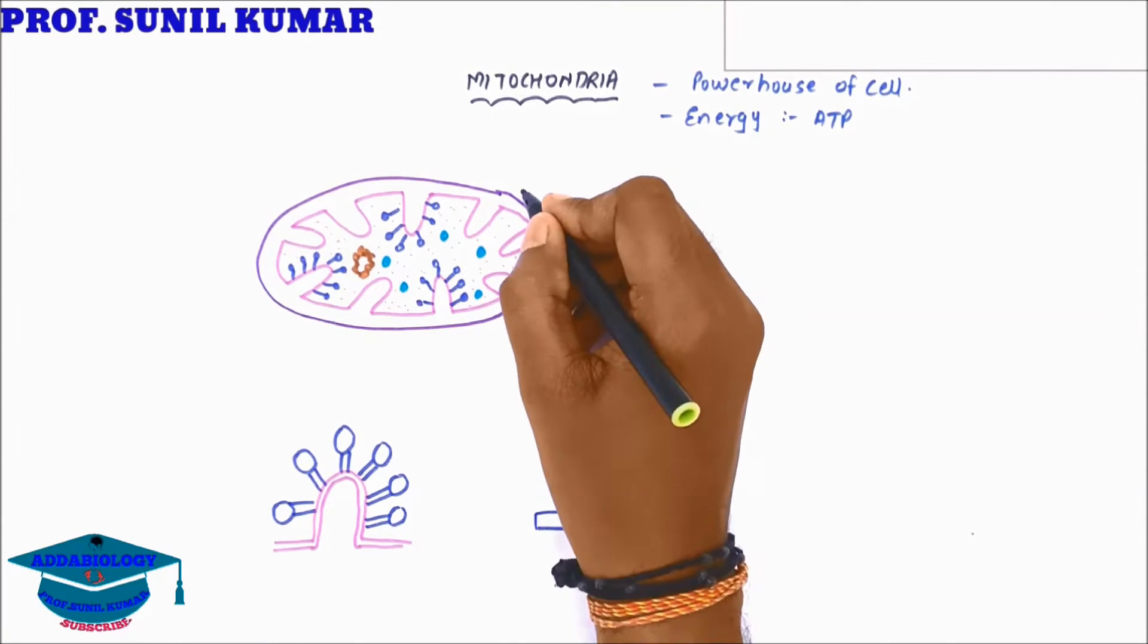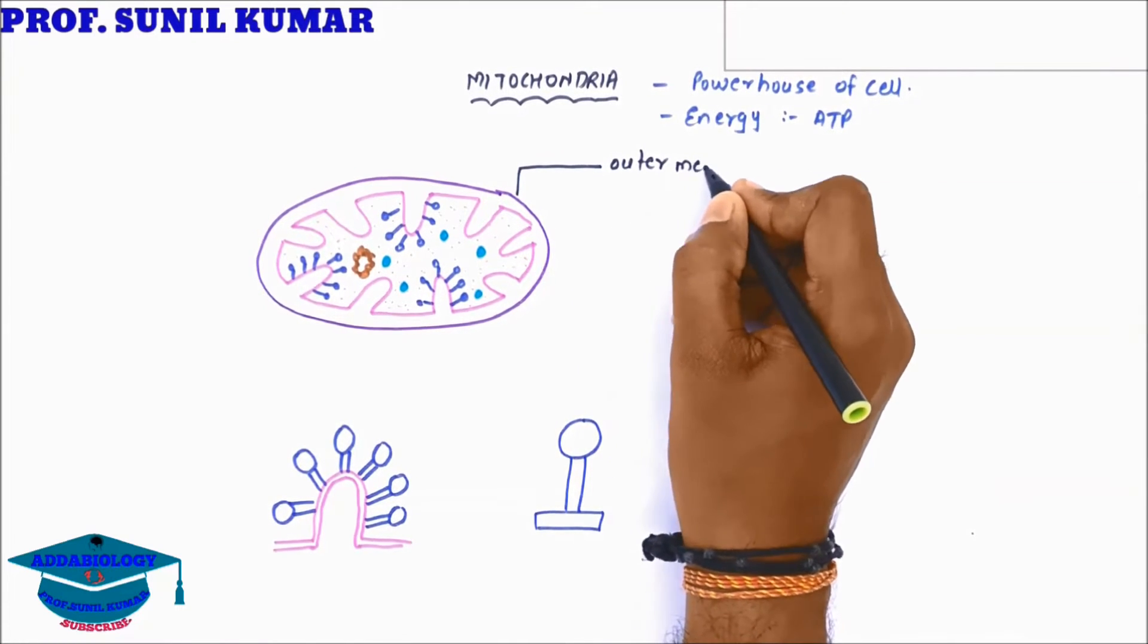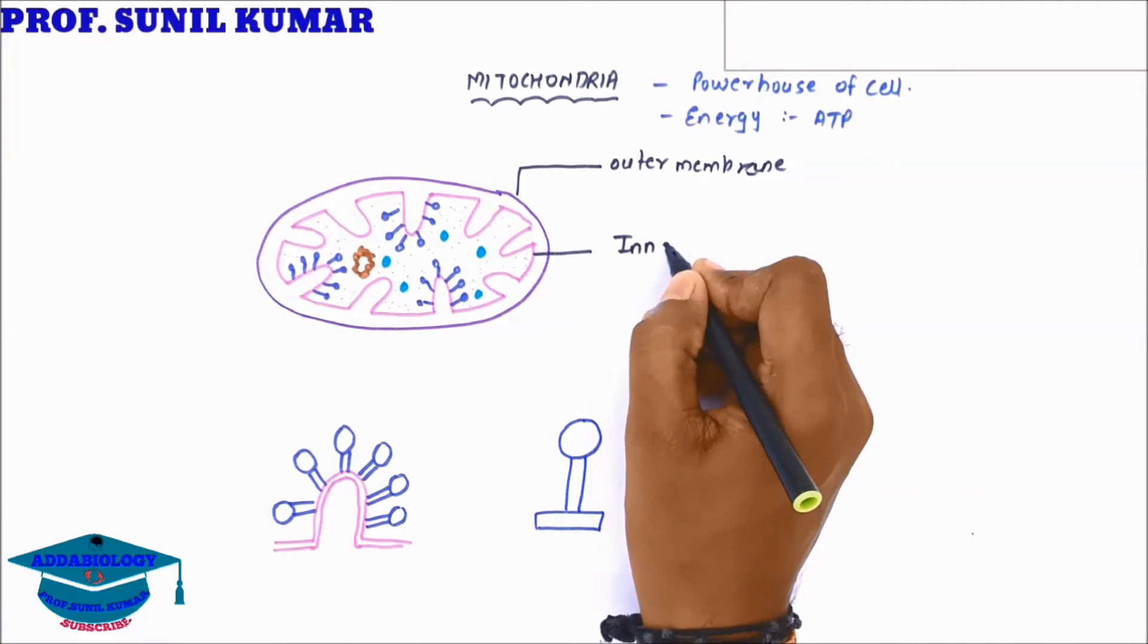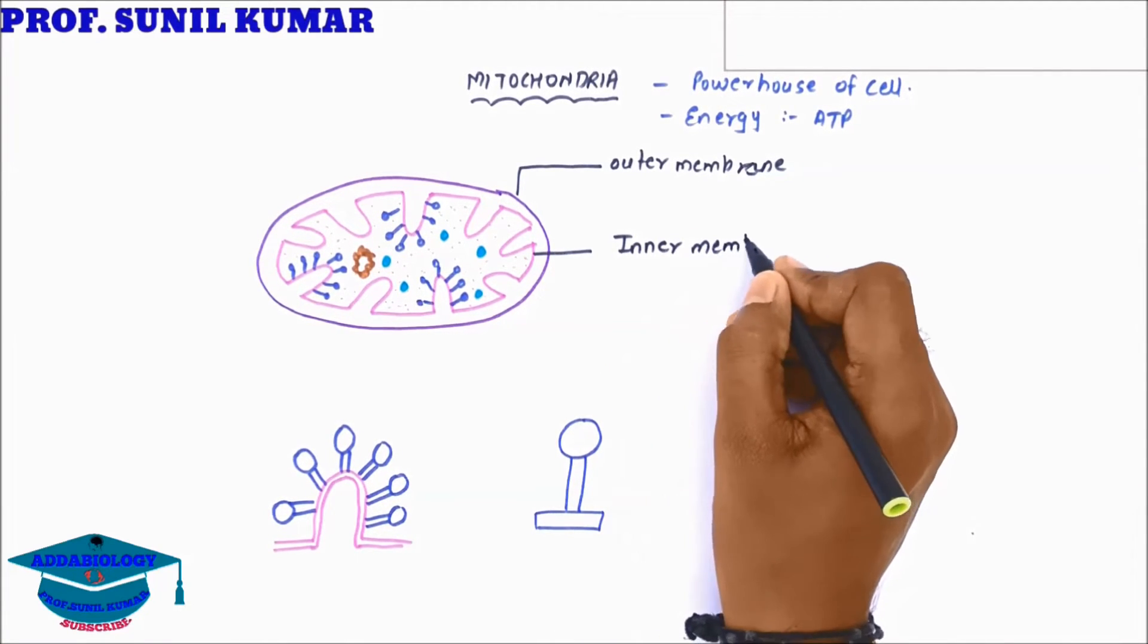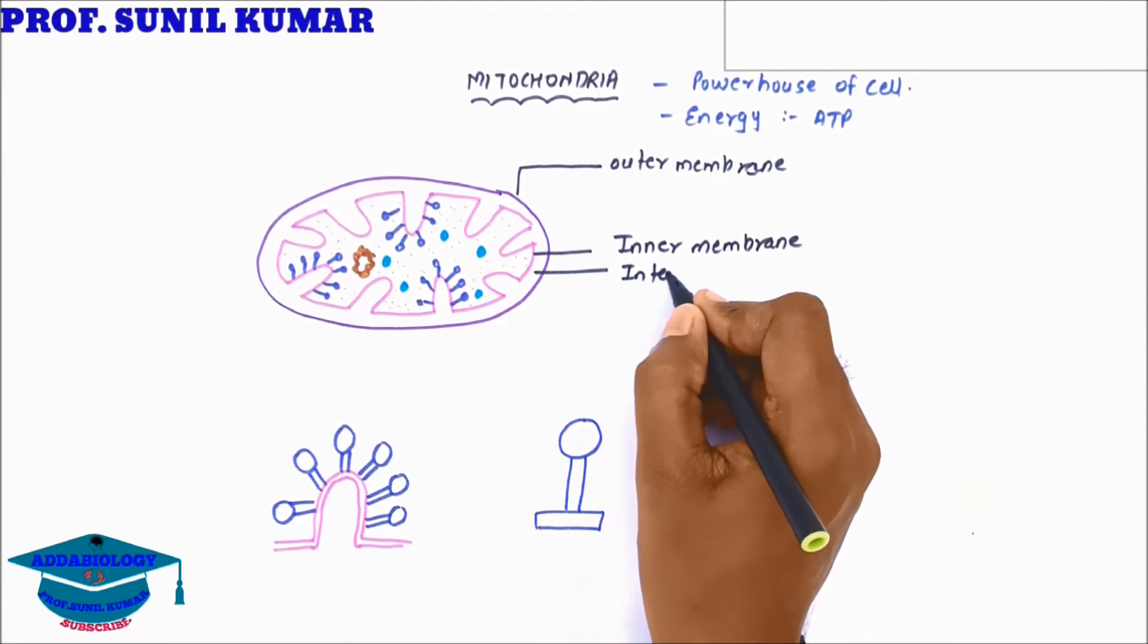Mitochondria is a double membranous structure consisting of an outer membrane and an inner membrane. Between the two membranes there will be a space, and this space is called the intermembranous space.